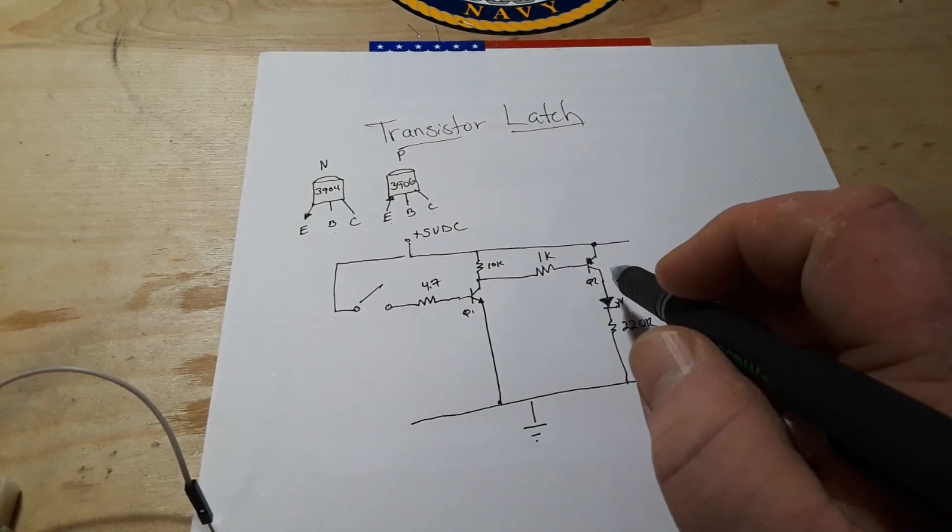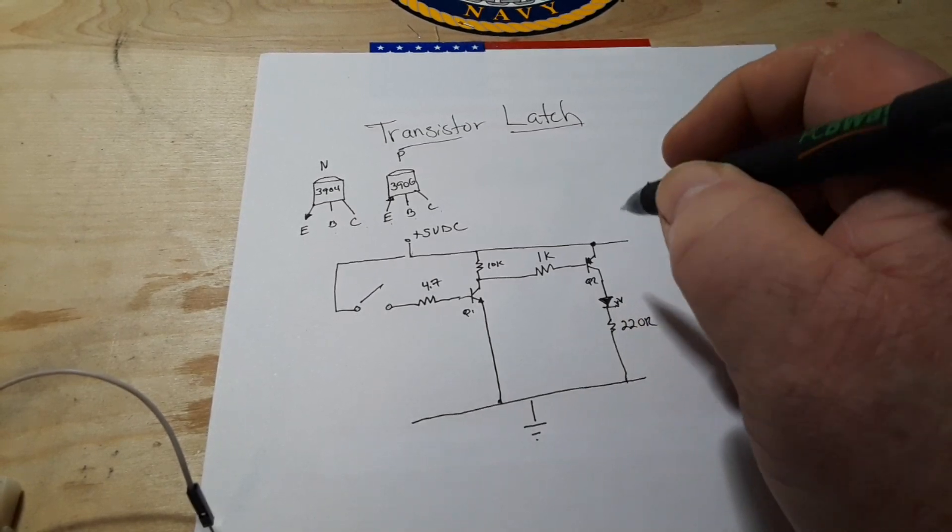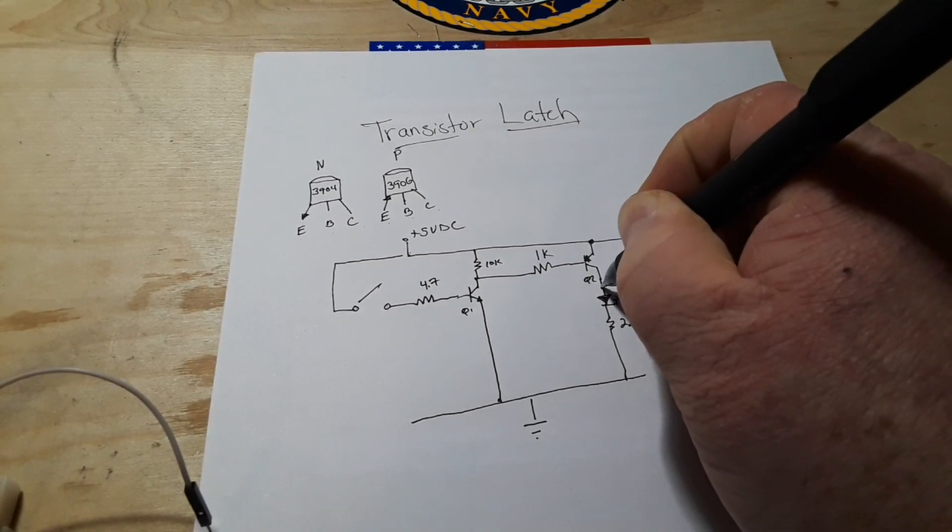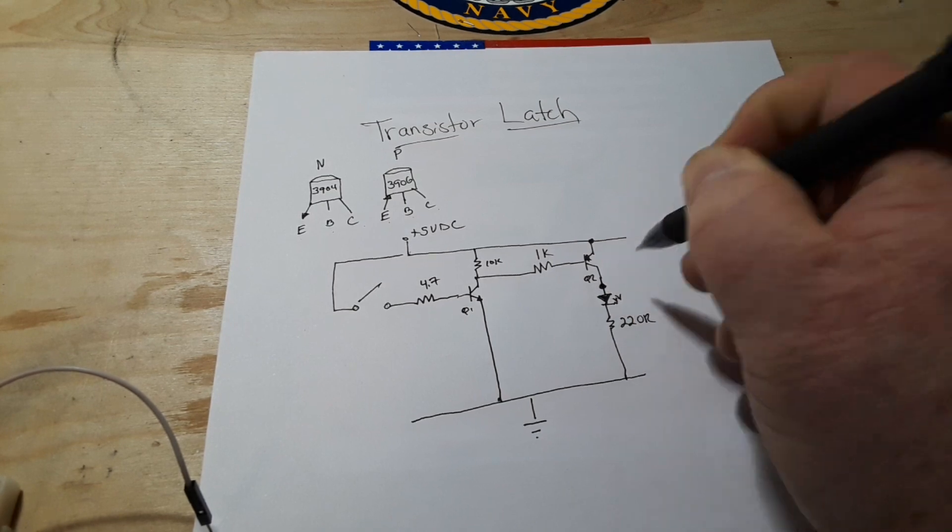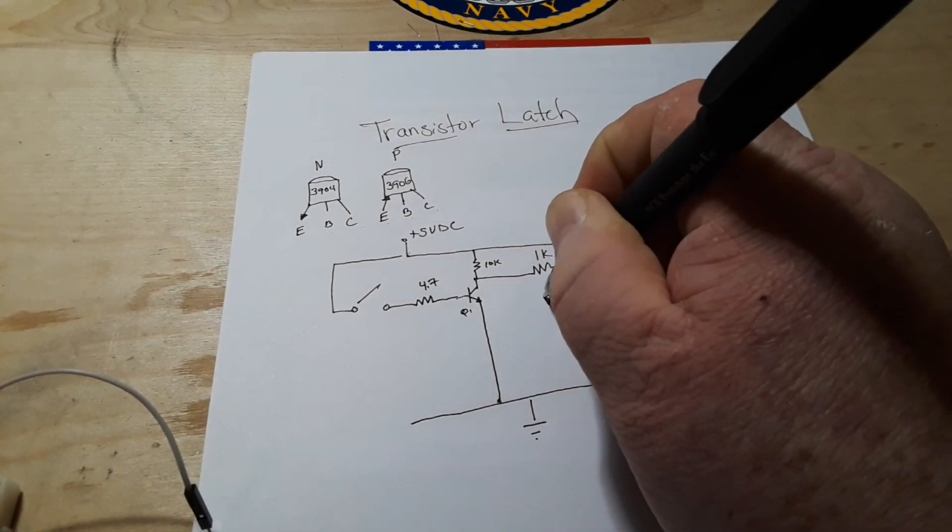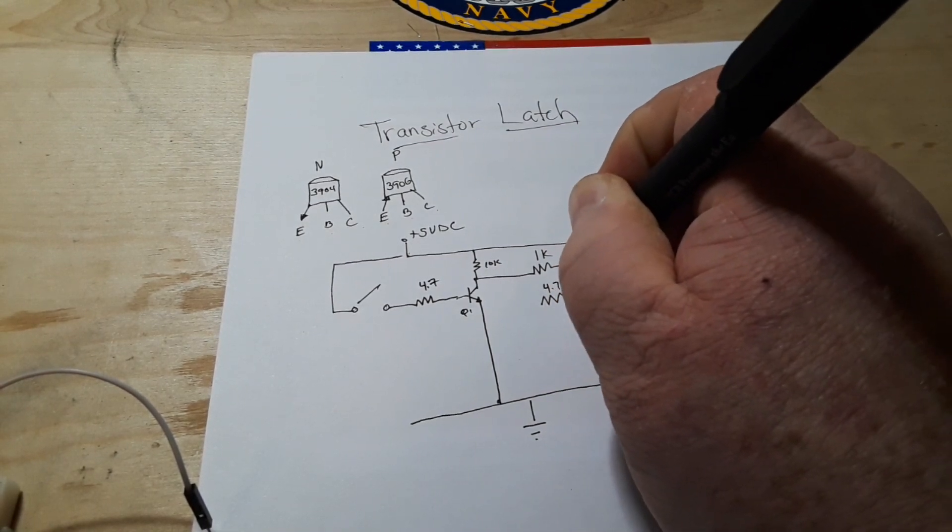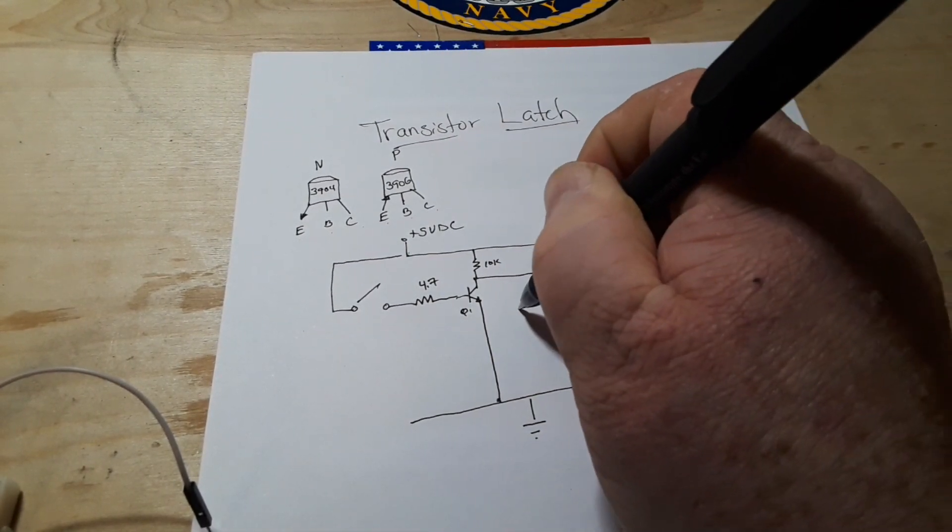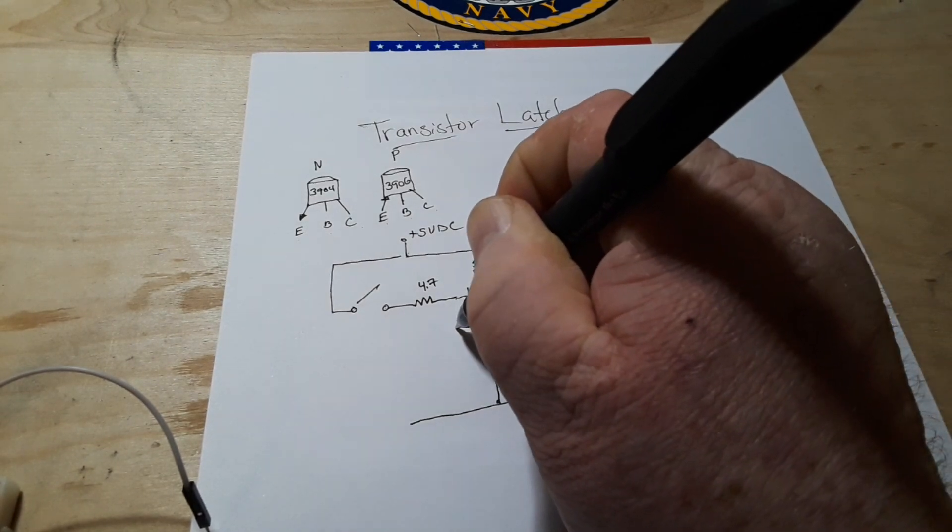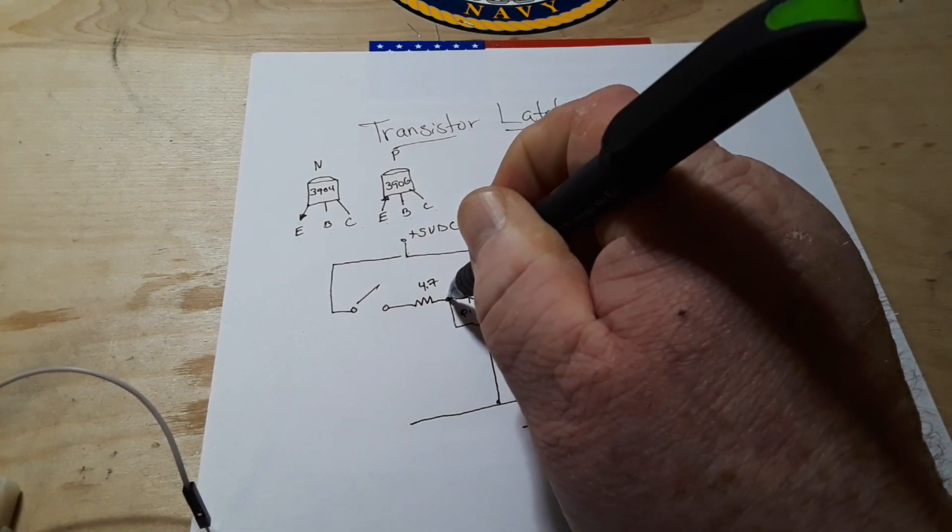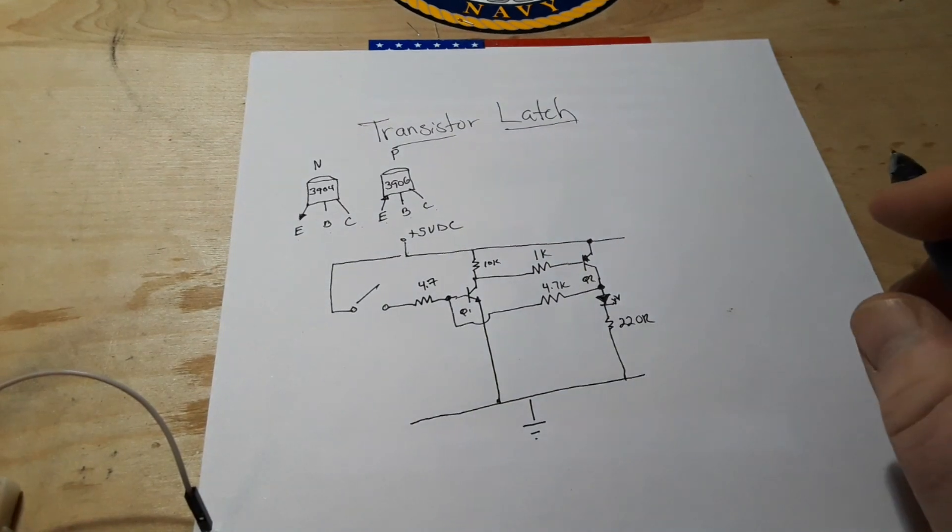So what we are going to do is we're going to take a pull off of that right there add in another 4.7k ohm resistor and bring it back to the base of Q1.